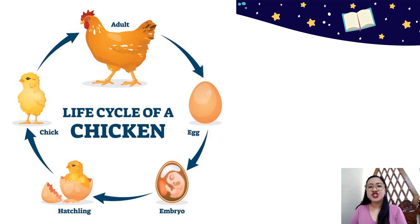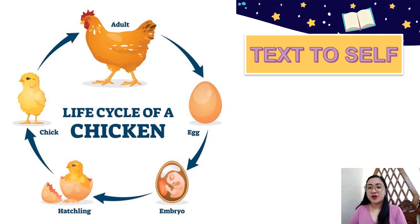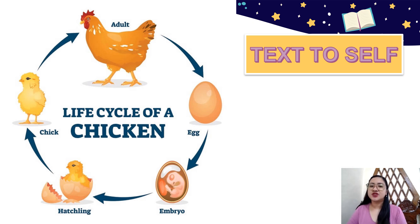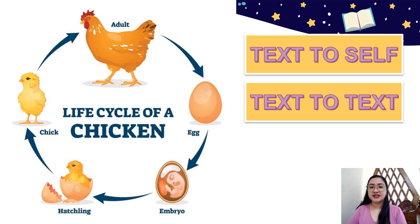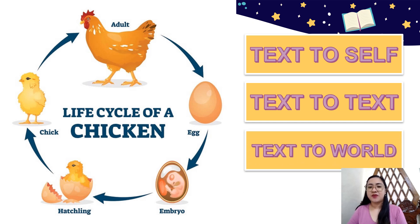Speaking of chicken, here is the life cycle of a chicken, showing how it grows from egg to adult. For text-to-self: like the chicken, I also grew from a baby to a healthy big girl and will continue to grow. For text-to-text: I learned in science that even plants grow from young to old. For text-to-world: like the chicken, the earth continues to grow older, and it will be weakened by what we are doing, so we need to take good care of it.